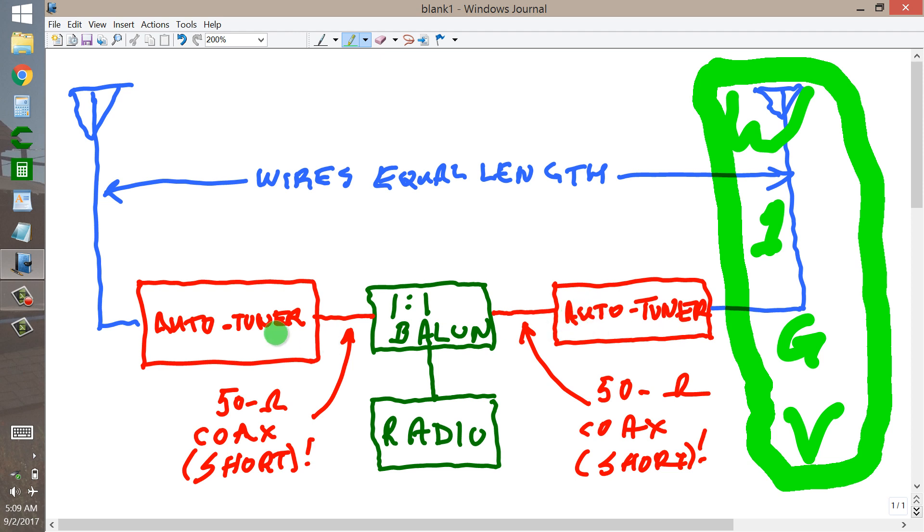It requires two automatic antenna tuners that are RF actuated. They cannot be controlled by the radio. In other words, you should not have to use a separate control cable between the radio and the tuners, because radios only have one control cable, if any, for cable controlled automatic tuners. They should be RF actuated automatic antenna tuners.